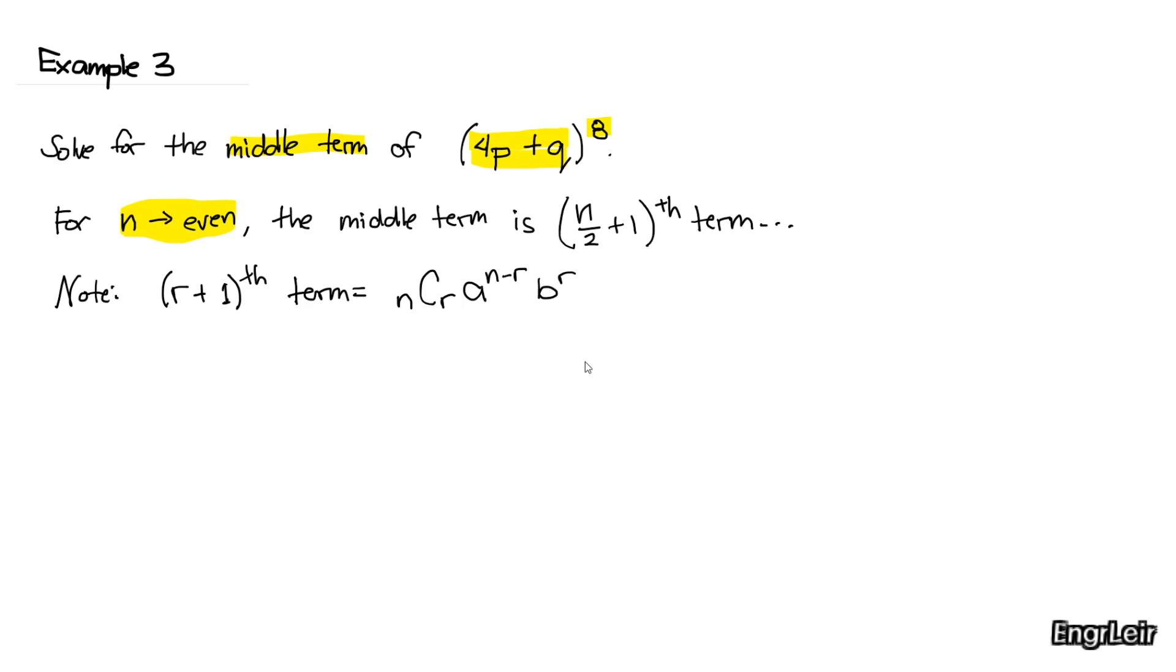In this case, since n is 8, the middle term will be at 8 over 2 plus 1, or the 5th term.